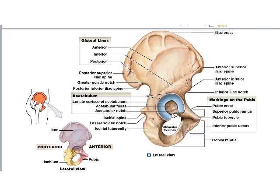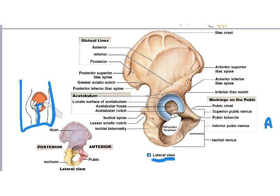Always ask yourself: what view am I looking at? We're going to start with a lateral view — looking at someone from the side. If we took away the femur, we're looking at the right pelvis from a lateral view, with anterior here and posterior there, superior here and inferior there. The most obvious thing you see is a depression or circle called the acetabulum.